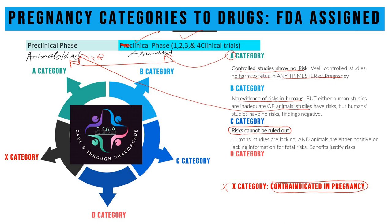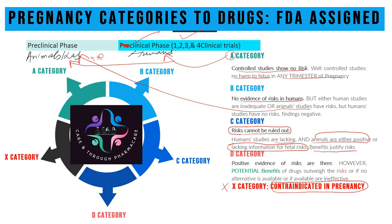In Category C, human studies are lacking and animal studies are either positive or lacking information on fetal risk, but the benefits still justify the risk and that is why the prescriber goes ahead. As far as Category D is concerned, there is positive evidence of risk; however, the potential benefits of the drug outweigh the risk.